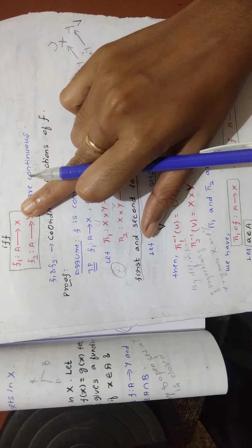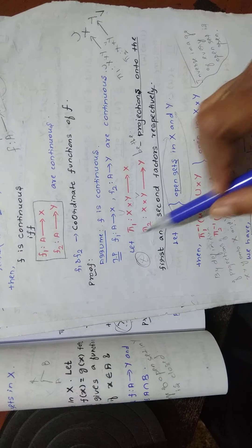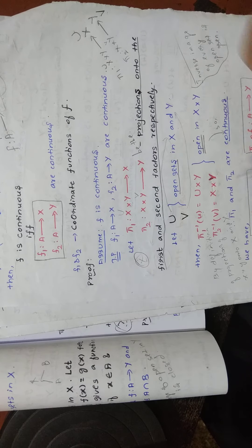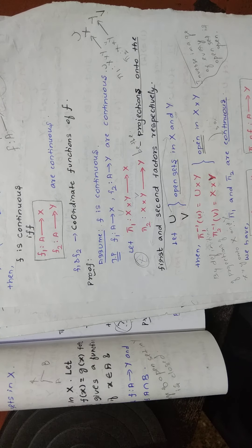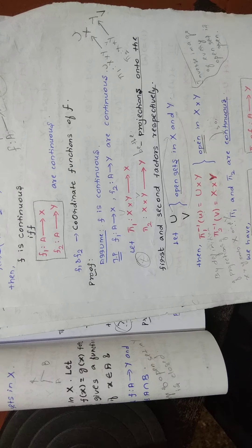This is an if-and-only-if statement, so we will assume the first part and prove the second part first. Assume f is continuous and we will prove that f₁ from A to X and f₂ from A to Y are continuous. To prove this, we take projections: π₁ from X cross Y to X, and π₂ from X cross Y to Y — the projections onto the first and second factors respectively.